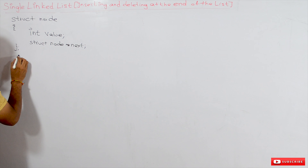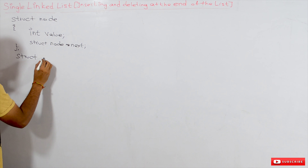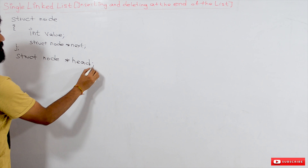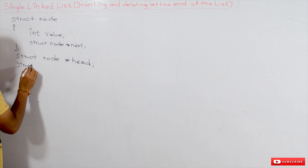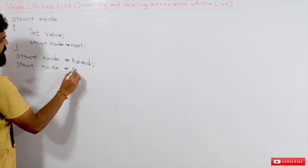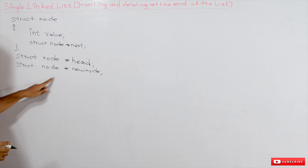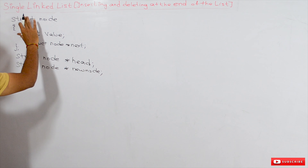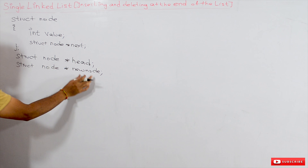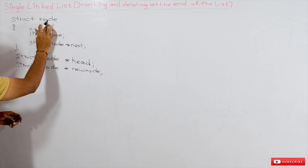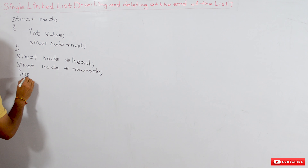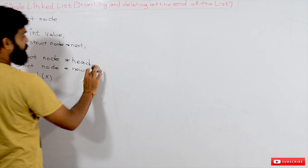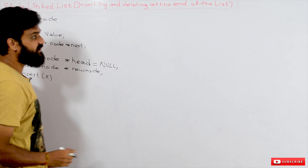We will construct the algorithm for a singly linked list where insertion and deletion is done at the end of the list. First, we create a structure called 'struct node'. This structure has two members: an integer variable named 'value', and a self-referential pointer 'struct node* next', which stores the address of another node of the same type.